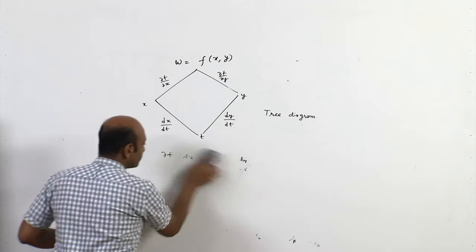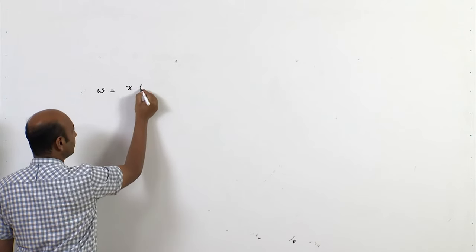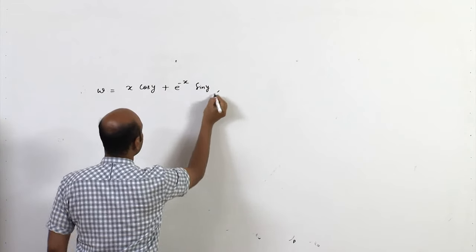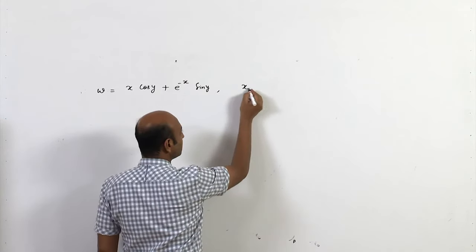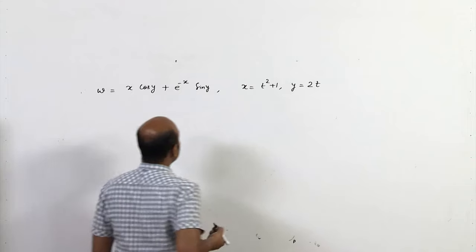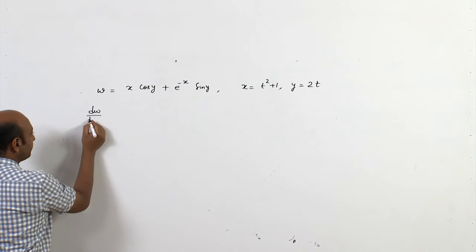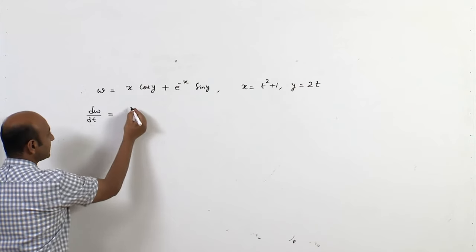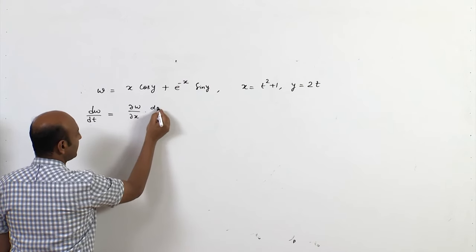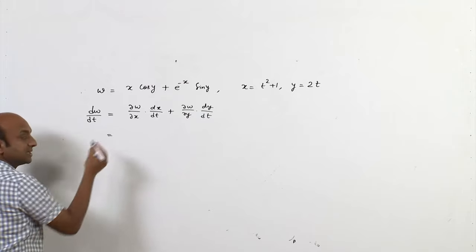Let us solve a problem. w = x cos y + e^(−x), where x = t² + 1 and y = 2t. Here w is a function of x and y, and x and y are both functions of t. We want to compute dw/dt, which by chain rule is: dw/dt = (∂w/∂x)(dx/dt) + (∂w/∂y)(dy/dt).